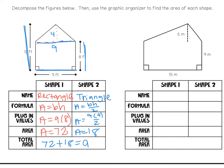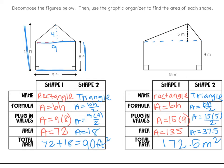Go ahead and pause the video — try the second one on your own, then press play to check your answers. You should have gotten an answer of 107 and 72.5 meters squared. If you did not get that, look at my work and try to figure out what you did wrong.